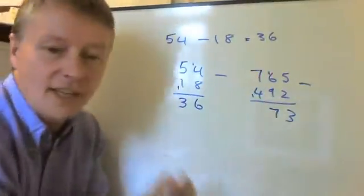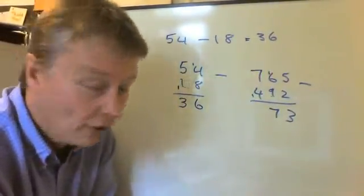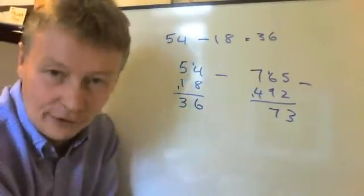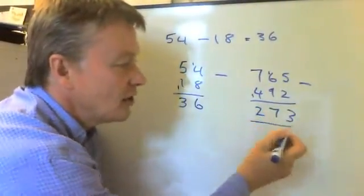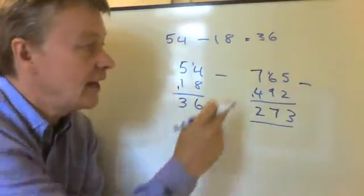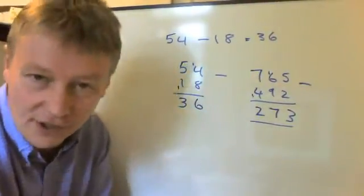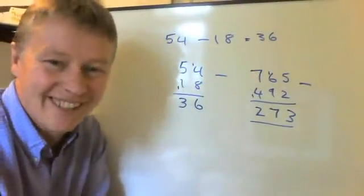And then the last little bit, I've got 7 take away 4, take away 1. So 7 take away 4 is 3, take away 1 is 2, which is 273, is the answer to 765 take away 492.